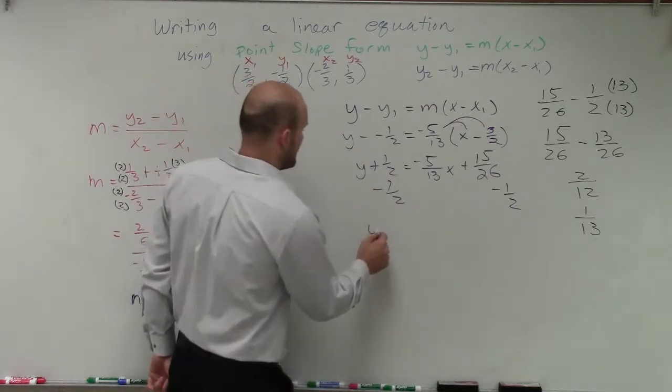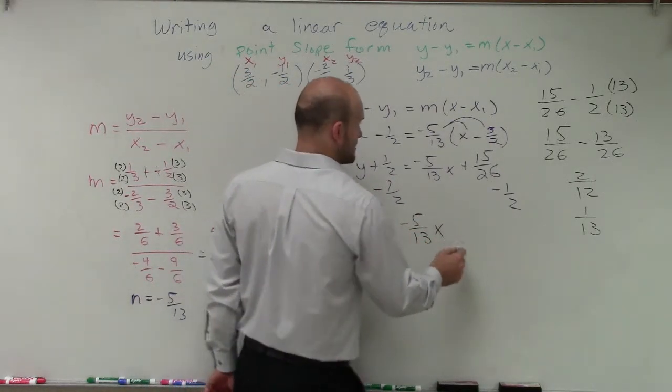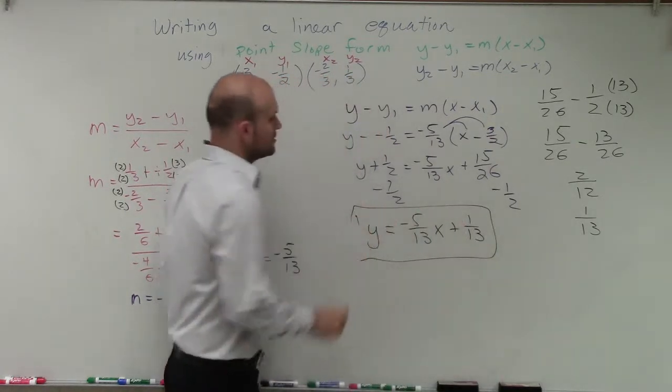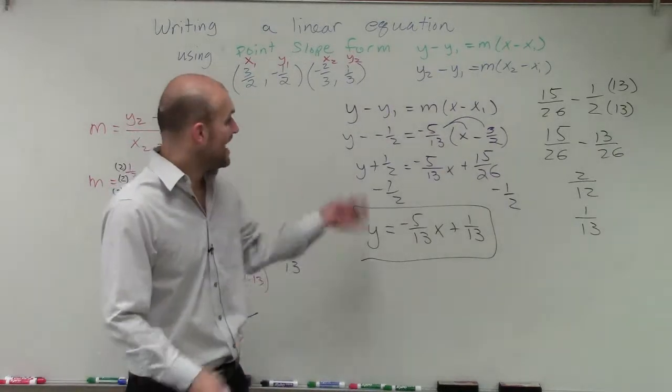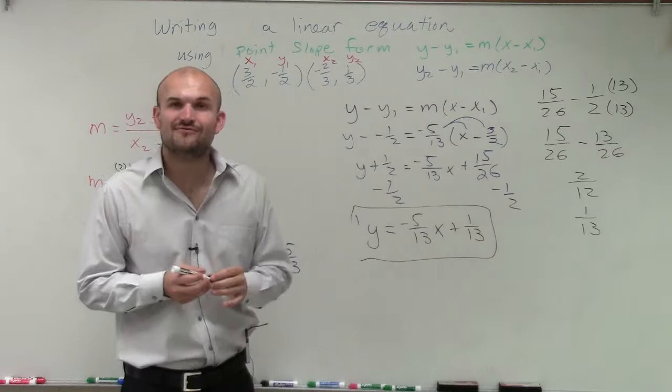So therefore now I have my final equation is y equals negative 5 over 13x plus 1 over 13. So there you go, ladies and gentlemen. That is how you convert from two points down to slope-intercept form. Thanks.